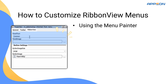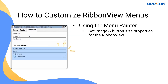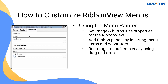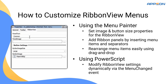Each separator in the menu becomes a new panel in the ribbon-style interface. If you want to customize individual buttons, you can use the button image property to assign a different icon and the button image size property to control the button size. This gives you precise control over how your menu items appear on the ribbon. Adding new buttons or panels is as simple as adding new menu items, and you can rearrange them by dragging and dropping directly in the menu painter. For even more flexibility, you can modify these settings at runtime using the menu changed event, allowing your application to adapt the ribbon-style layout dynamically based on user actions or conditions.